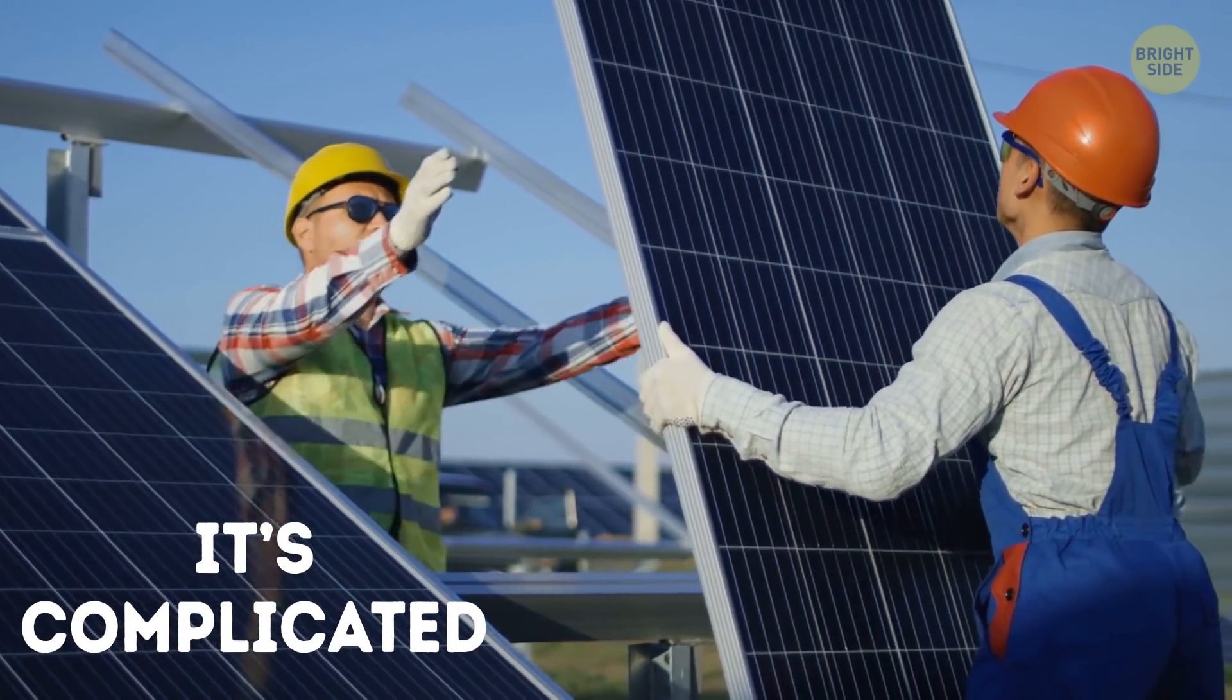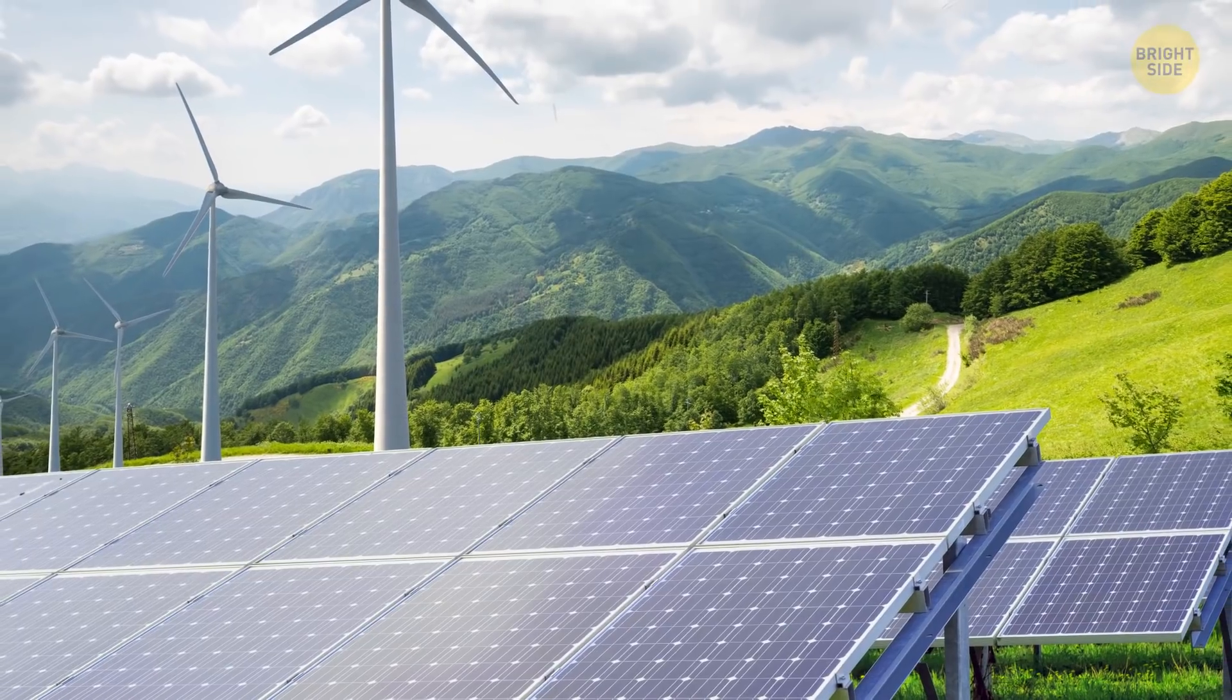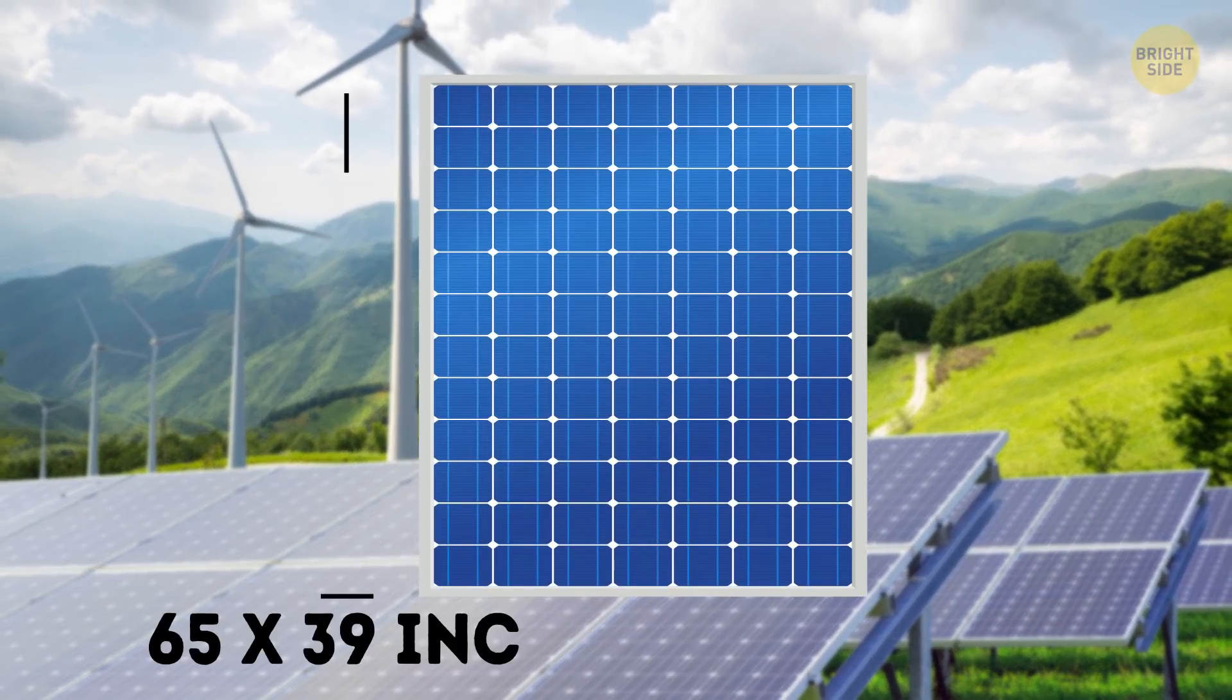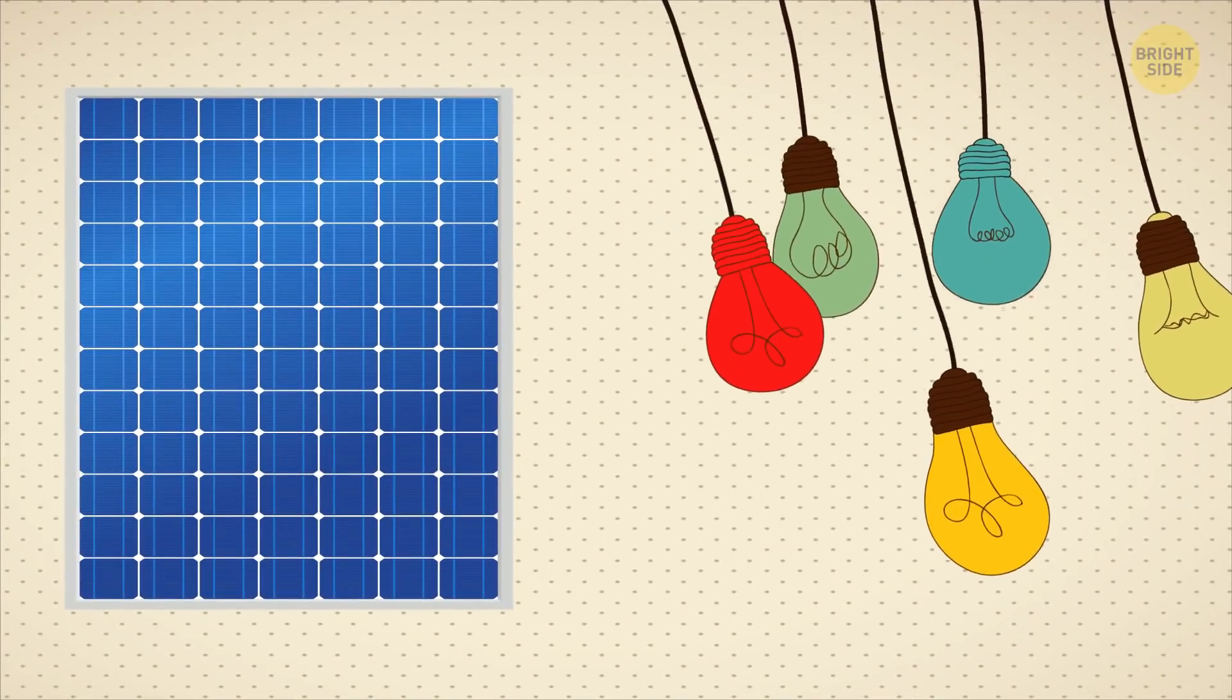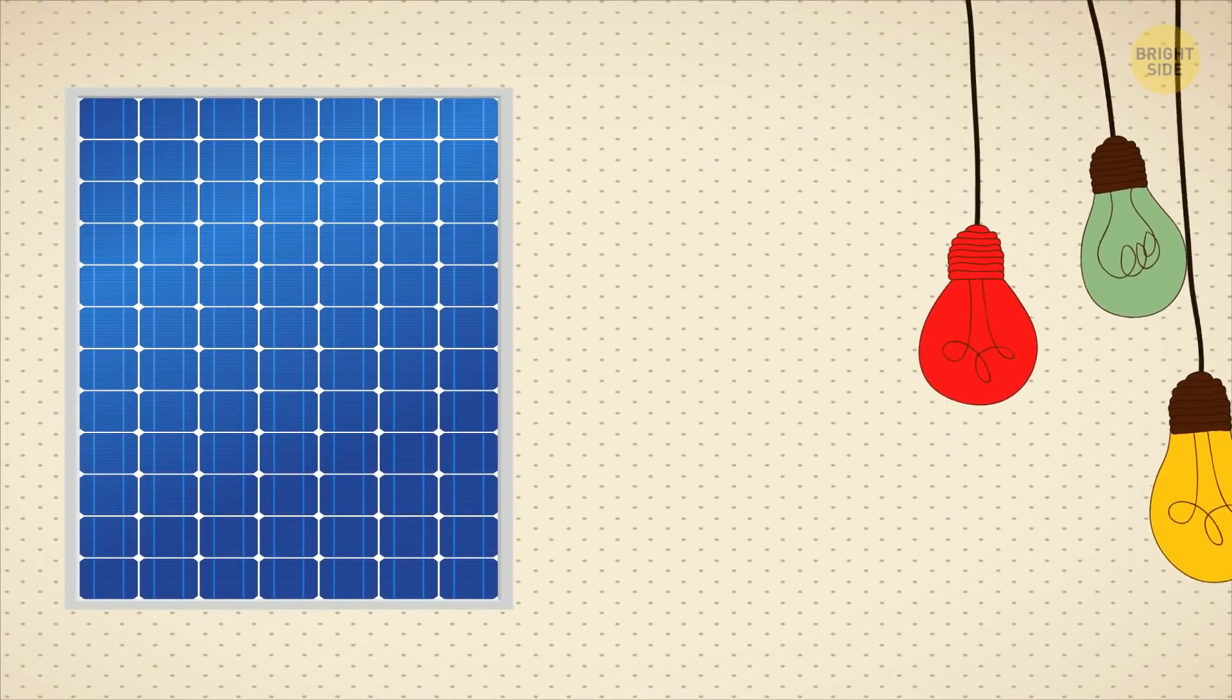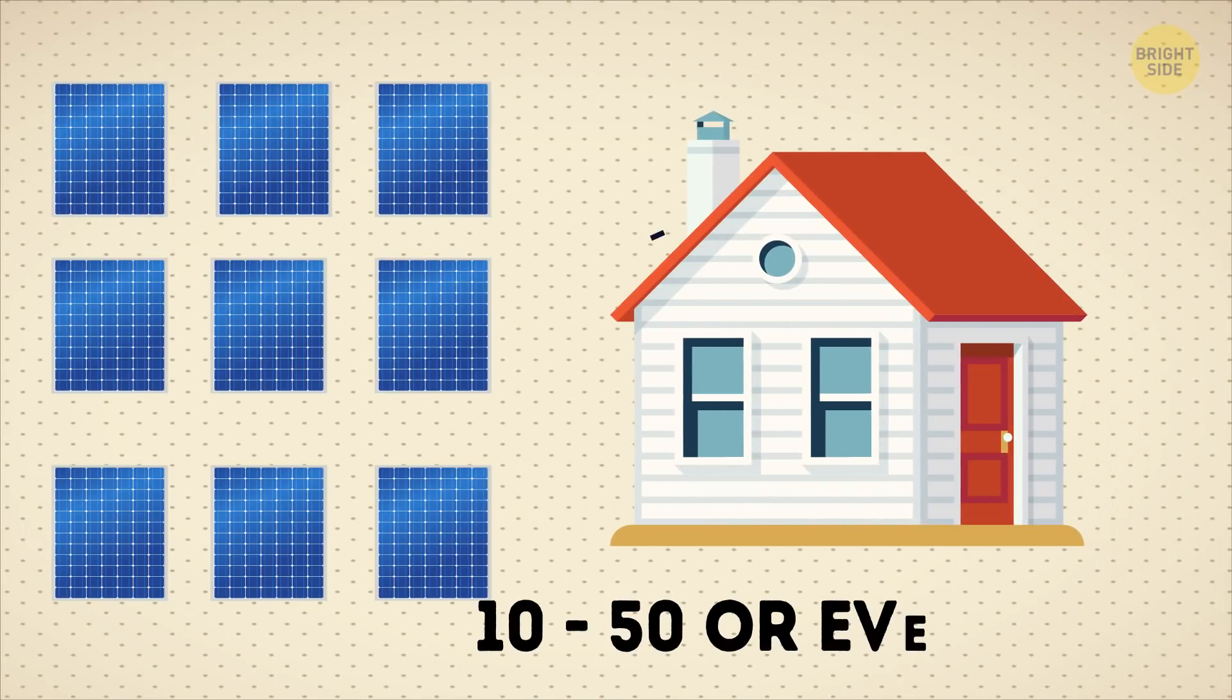Again, it's complicated. First of all, solar panels require space. Sure, they're not gigantic constructions. A single home utility panel measures on average about 65 by 39 inches. But one of those panels is just about enough to light a few light bulbs. That means to power a whole house, you'll need more panels—actually, anywhere from 10 to 50, or even more in some cases.